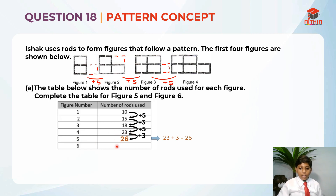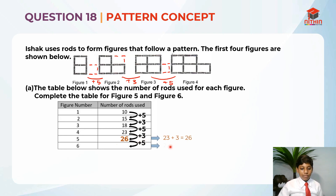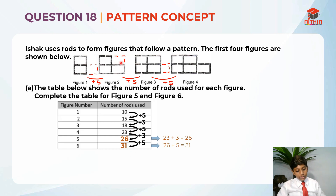Next, after 3 it is plus 5 again. So it is 26 plus 5, which equals to 31. So 31 is the answer for figure 6. I hope you understand my explanation for part A. Let's move on to part B now.